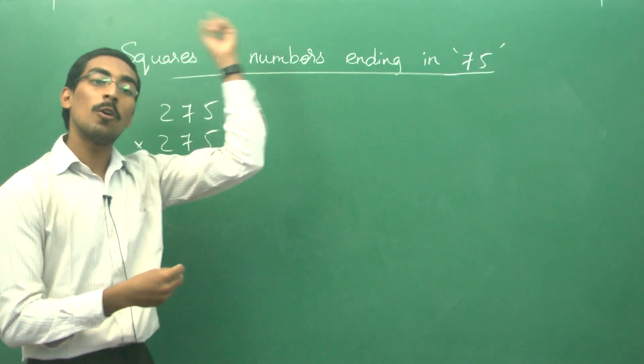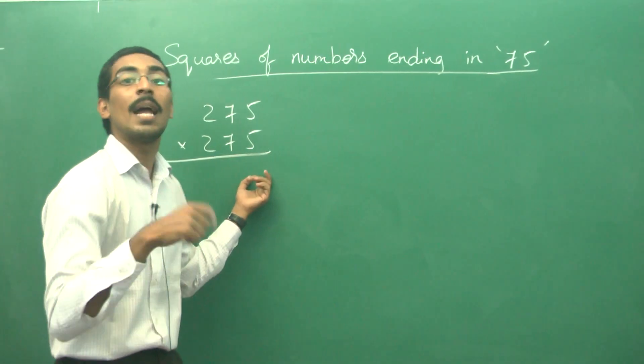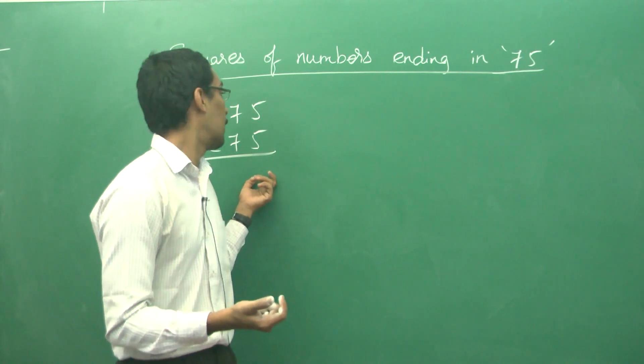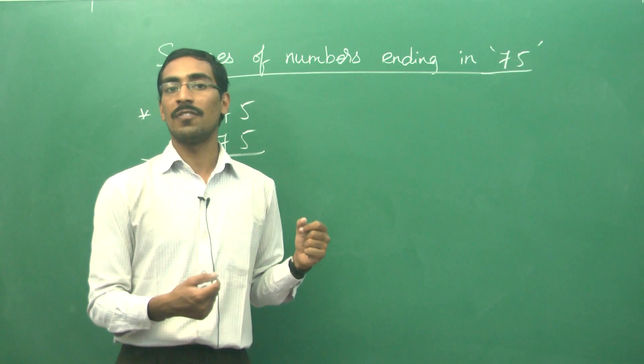If we go back to our 5 last digit technique, we have to do 5 into 5 equals 25, then applying n into n plus 1, it becomes 27 into 28, which is a tougher calculation for us, isn't it?